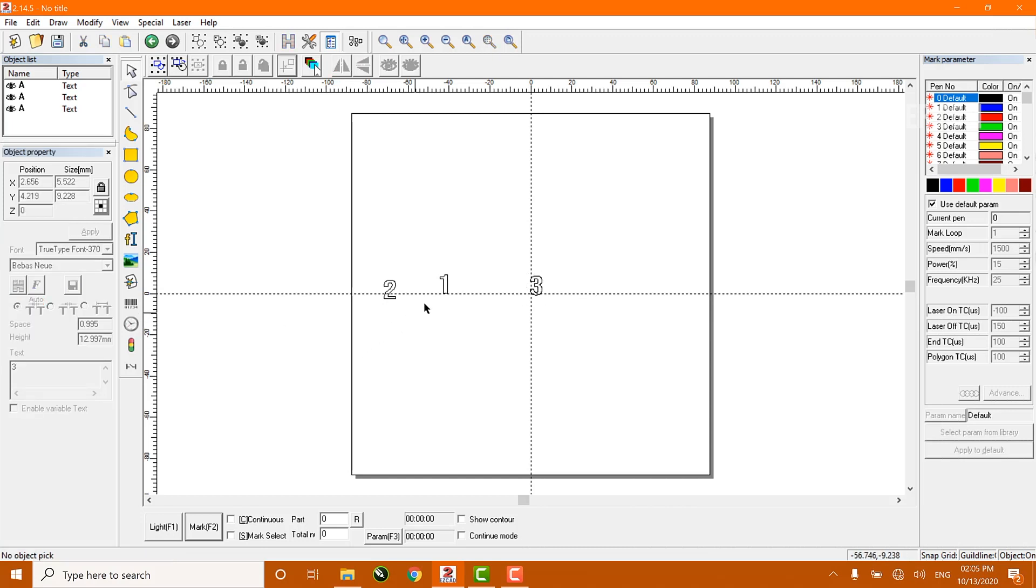Then I choose these three numbers or tests that I have in my engraving area. Then I center them with my center object tool and I am going to arrange them in order from 3 to 1.